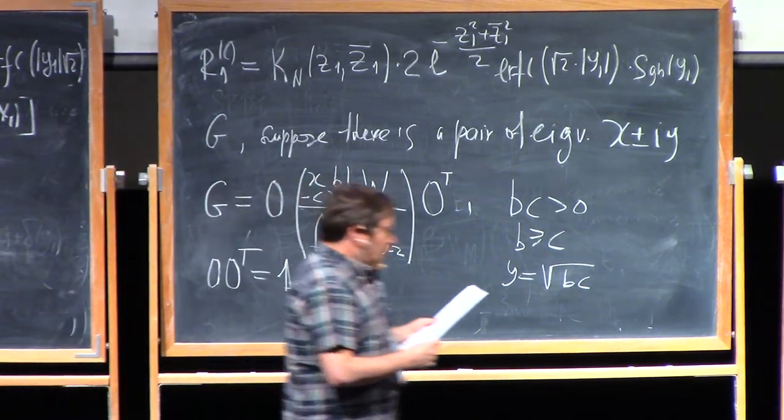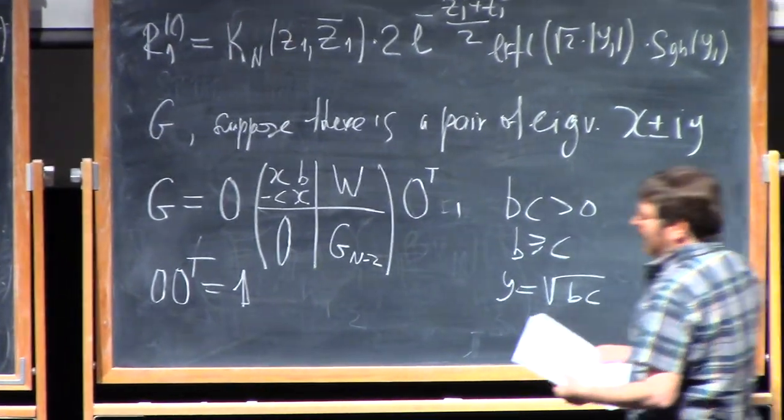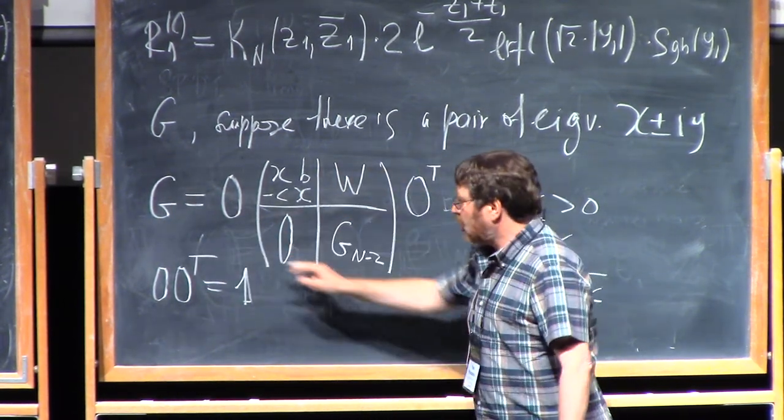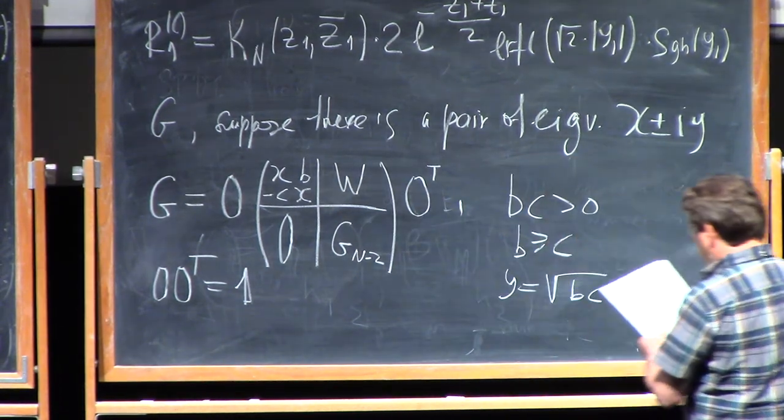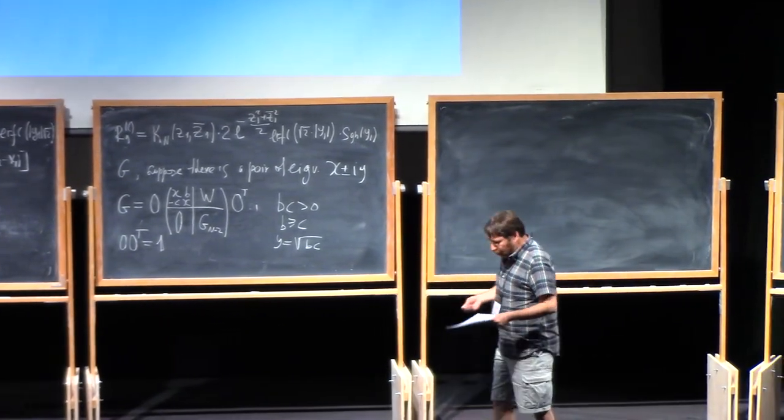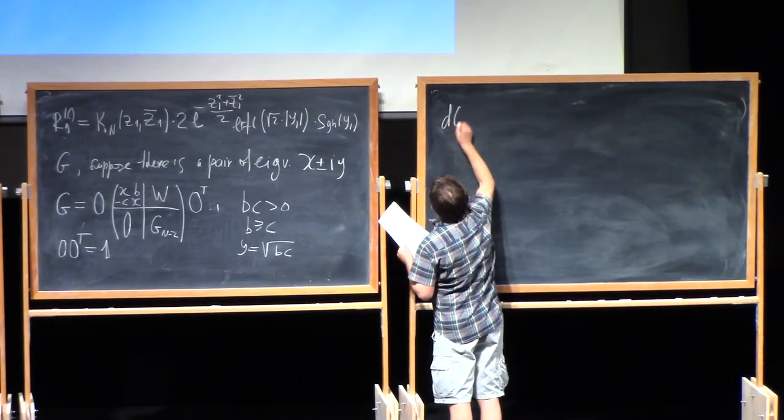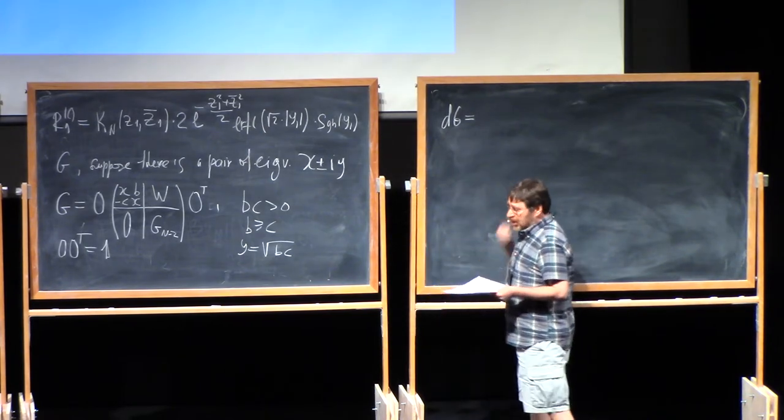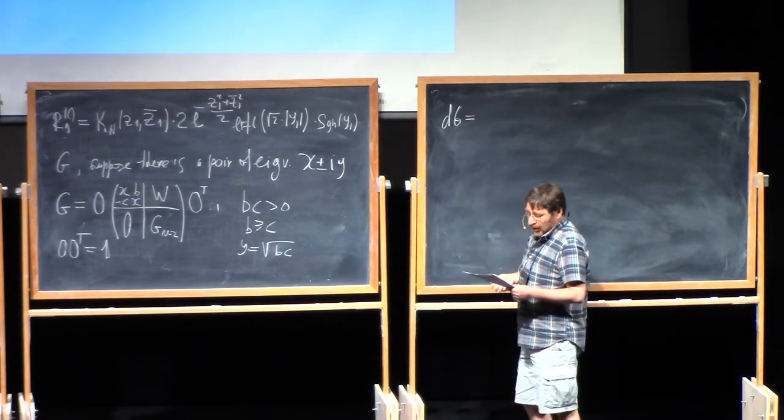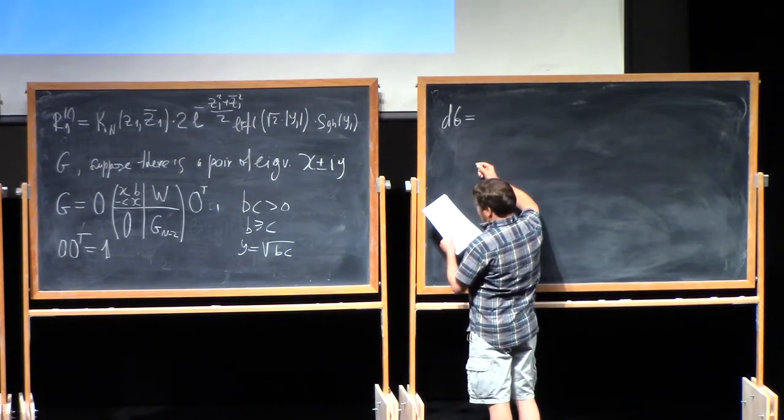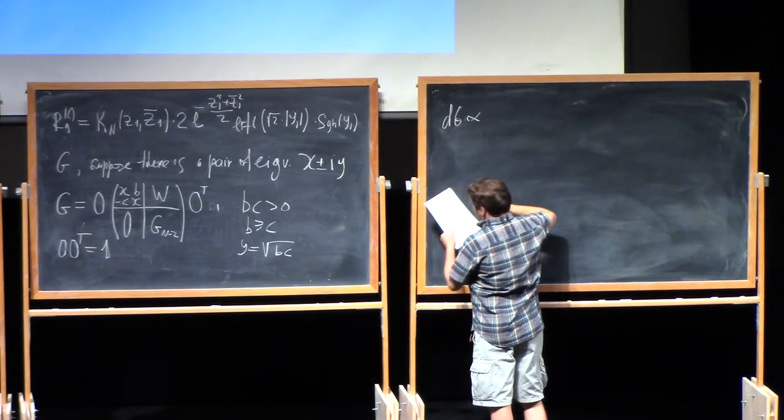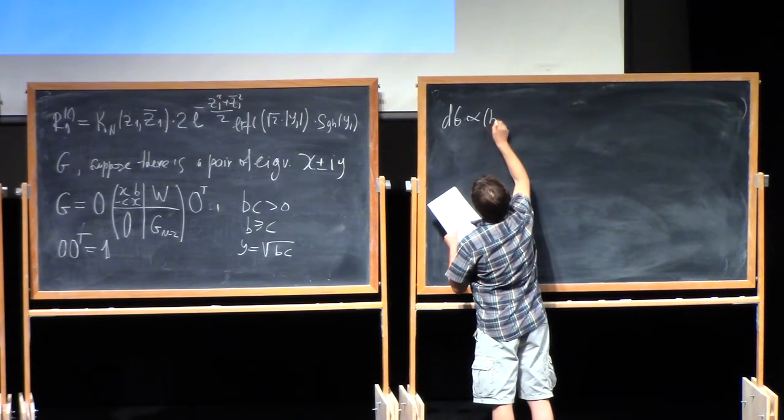Here we have some matrix W. Here we have all zeros, just two columns of zeros. And here we have a matrix which I denote as Gn minus 2. And finally, O transposed. So O is a matrix which is orthogonal, equal to identity matrix. But it's not general orthogonal matrix. It's made of two pair of orthogonal eigenvectors.